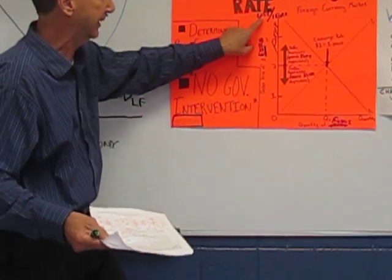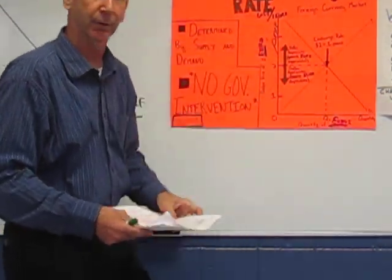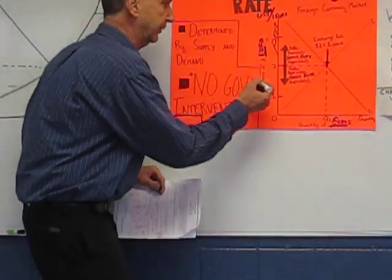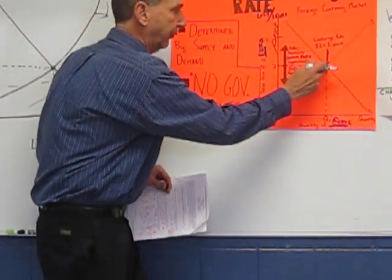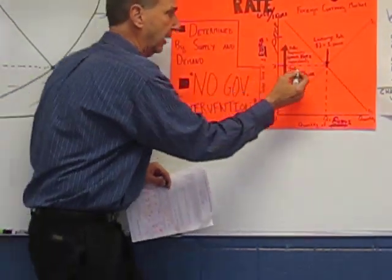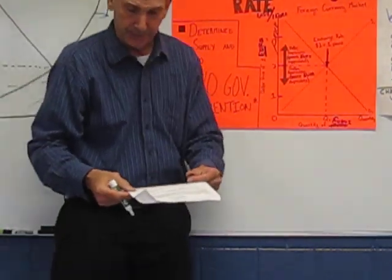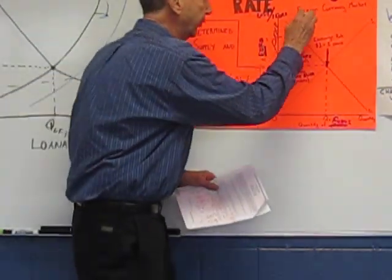This is the Euro market, so it would be the price level, how many dollars per one Euro. And, of course, this is the quantity of Euros. So, the equilibrium exchange rate will be right here at this level. And what's going to happen? There's going to be an increase in demand for the Euro.